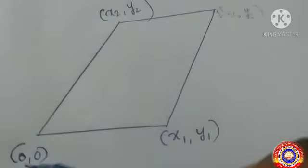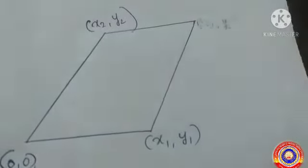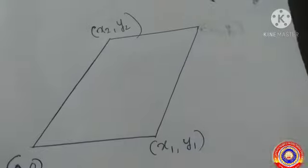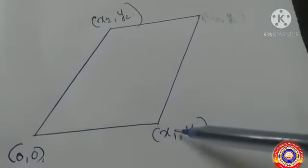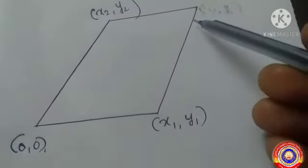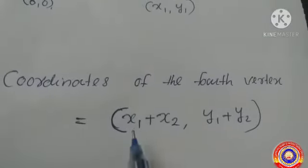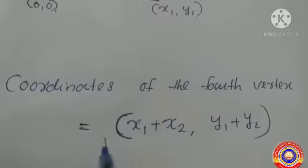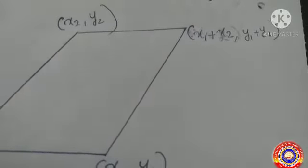Here is a parallelogram with three coordinates: the first one is the origin (0, 0), the second is (x1, y1), and the third is (x2, y2). Here x1, y1 and x2, y2 are the opposite vertices of this parallelogram. To find the fourth vertex, we add the x-coordinates of the end vertices of the diagonal, and add the y-coordinates of the end vertices of the diagonal. So the coordinates of the fourth vertex are equal to (x1 + x2, y1 + y2).